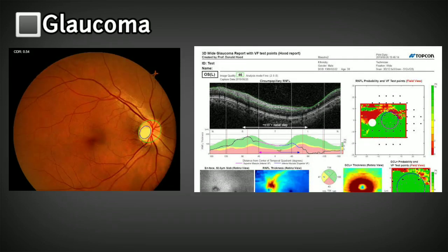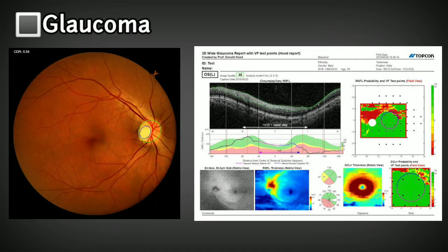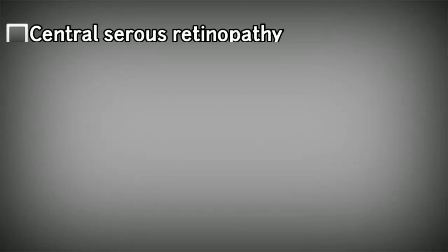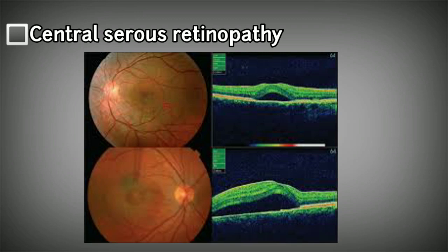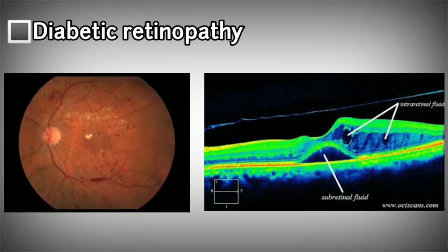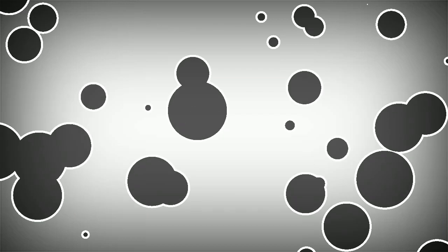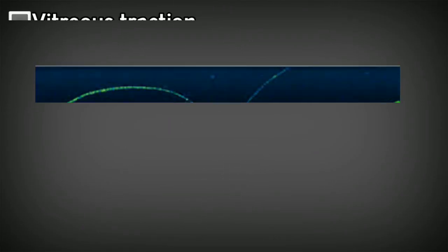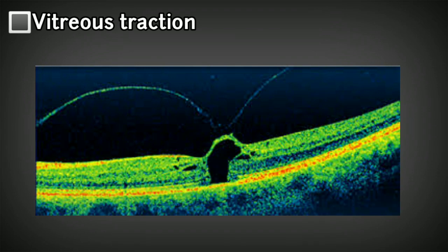The fifth one is glaucoma. The sixth one is central serous retinopathy. The seventh one is diabetic retinopathy. The eighth one is vitreous traction.